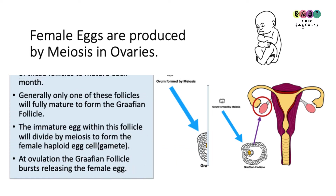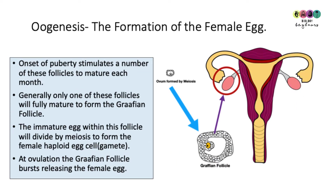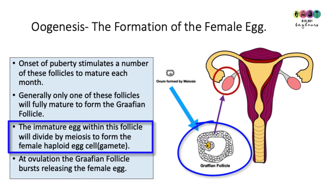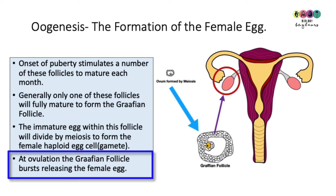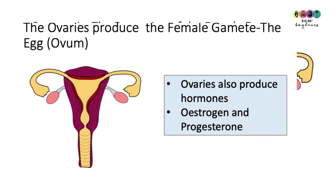With the onset of puberty, some of these follicles are stimulated to mature each month. Generally, only one will fully mature to form the Graafian follicle, and the immature egg inside — the oocyte — will undergo meiosis to eventually form the female egg, the female gamete. At ovulation, the Graafian follicle ruptures and releases the egg, which then enters the fallopian tube or oviduct. This process is called ovulation.